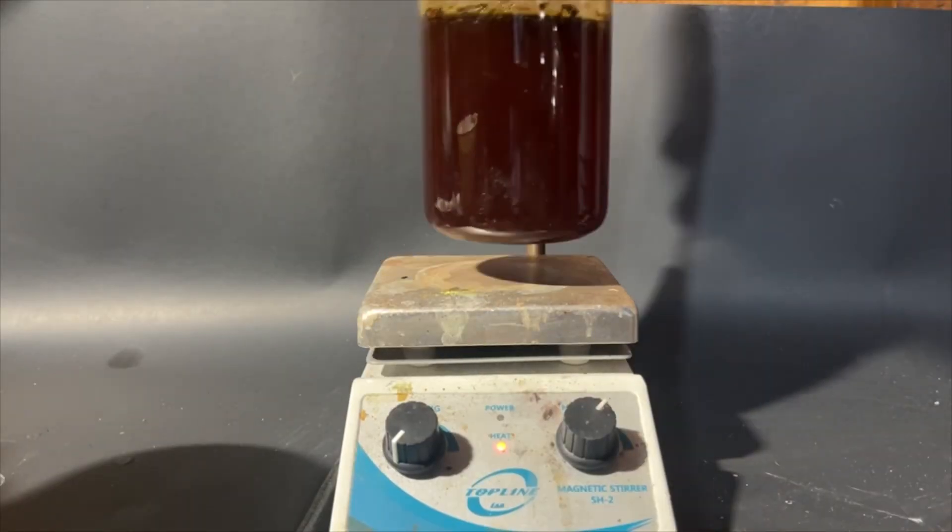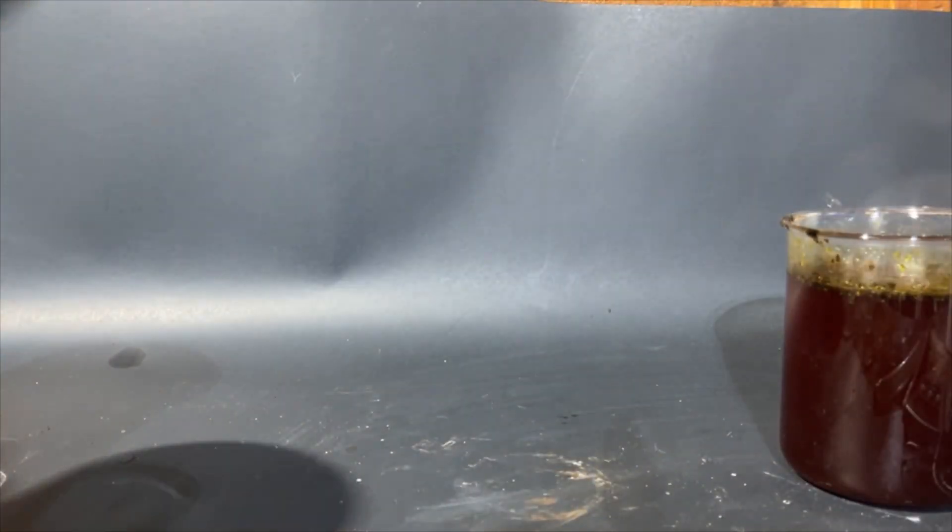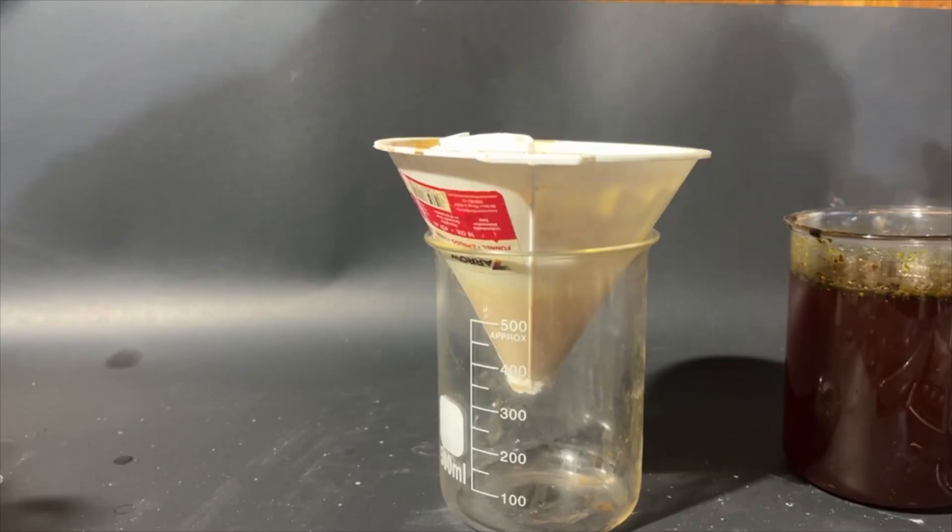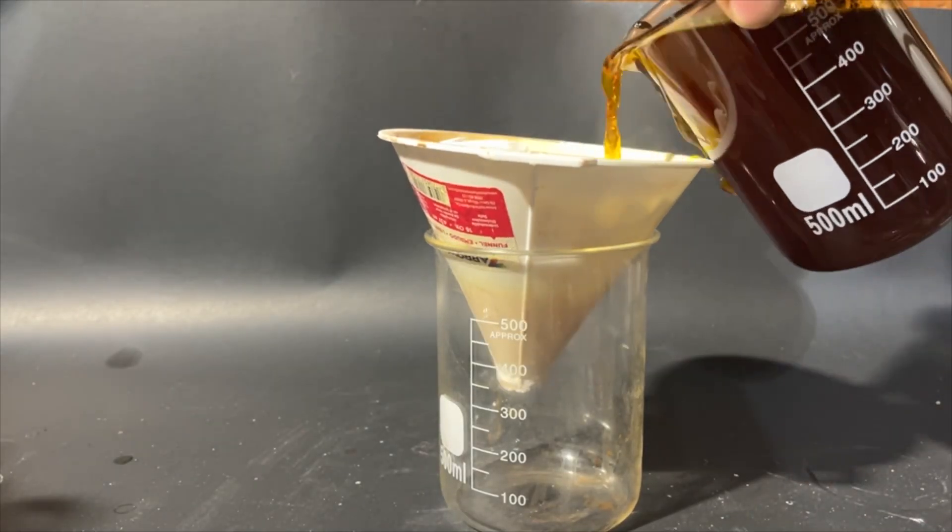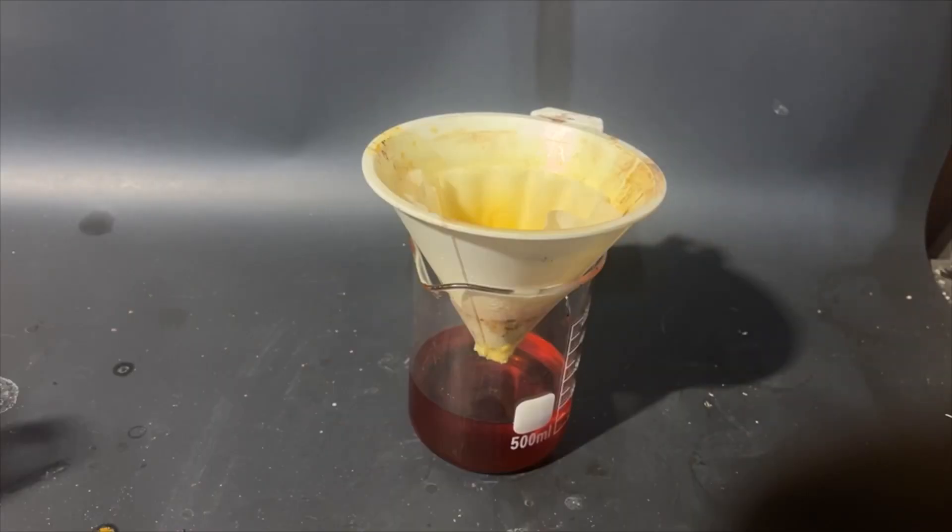Anyway, the next and final step is really simple. It's just a recrystallization, and all I'll need to do is filter out the solution and boil it down until there's only about 250 mils of the solution left. After this, I can leave the solution out to cool, and this is because it's about 10 degrees Celsius out here, so it's good.